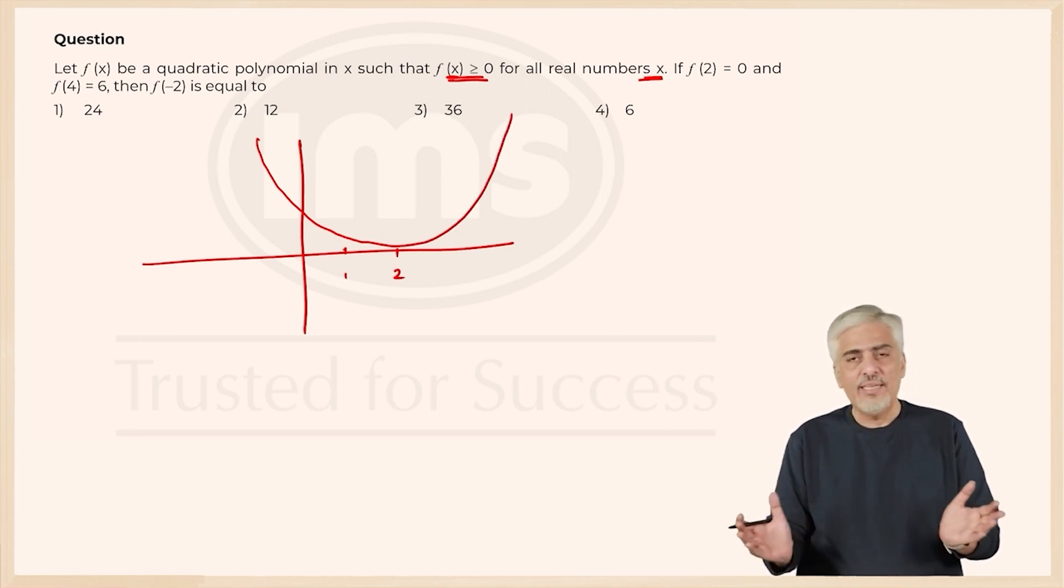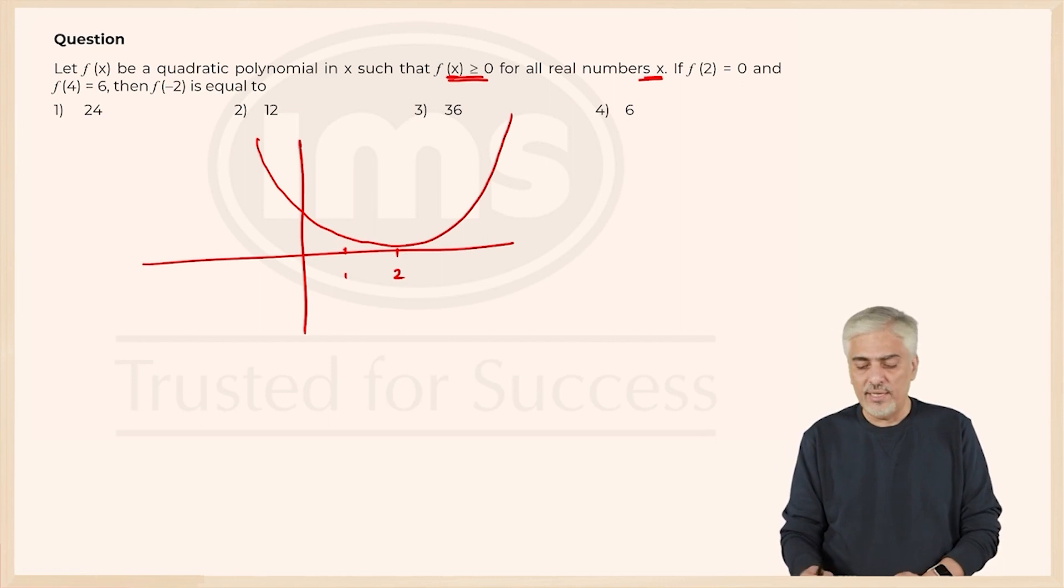It does not have to be so spread out. It could be a little bit anyway, that is okay. But f of 2 is 0. At x is 2, y is 0 and they have told f of 4 is 6. So at 4 it is 6.